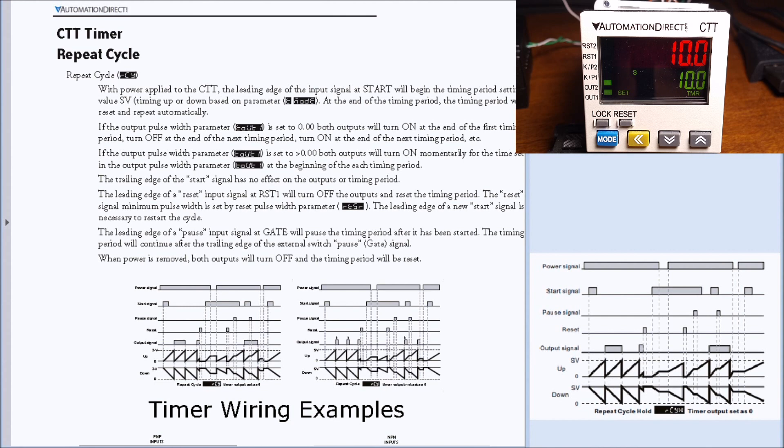So up on my screen here you'll see that we have our manual for the repeat cycle timer and it tells you how the actual timer works itself. Then we have timing charts. Now the timing charts are here on the right hand side and there's actually two of them and that's based on the output signal.